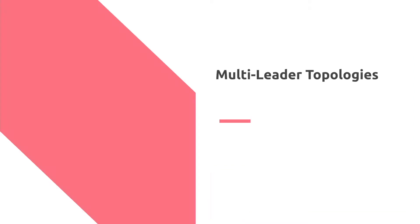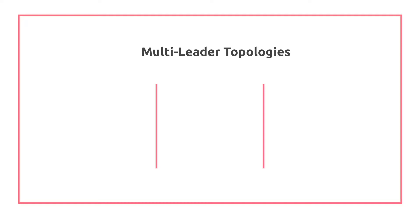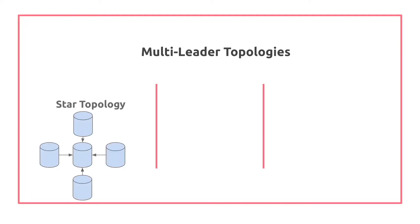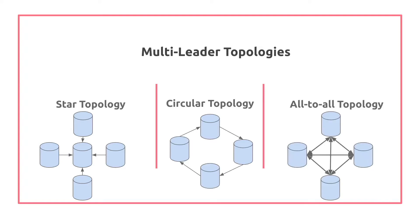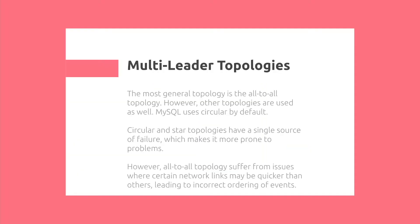Multi-leader topologies. There are three main topologies for multi-leader architecture: star topology, circular topology, and all-to-all topology. The most general is the all-to-all topology; however, other topologies are used as well — MySQL uses circular by default. Circular and star topologies have a single point of failure, making them more prone to problems. However, this doesn't make all-to-all strictly better, as it also suffers from issues where certain network links may be quicker than others, leading to incorrect ordering of events.